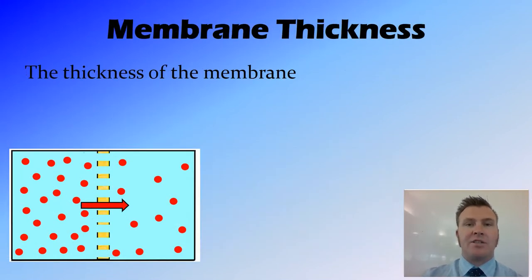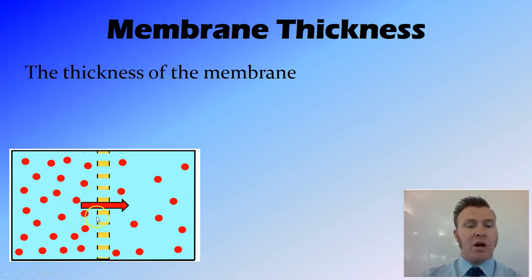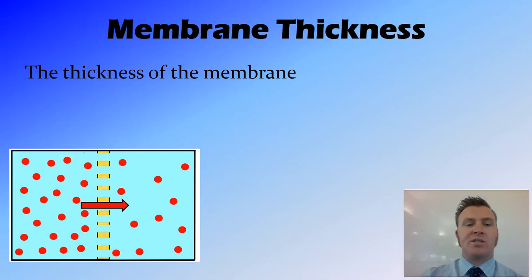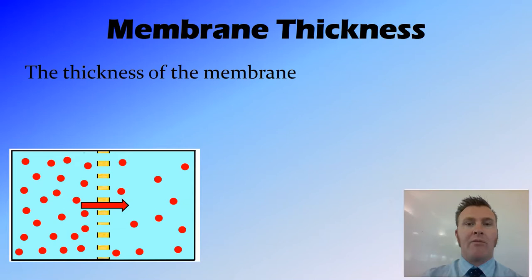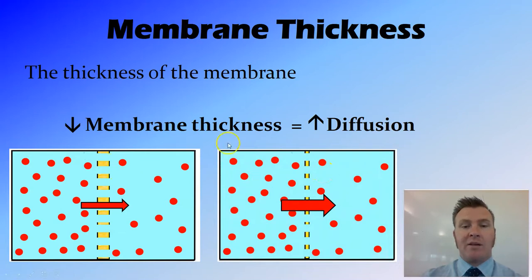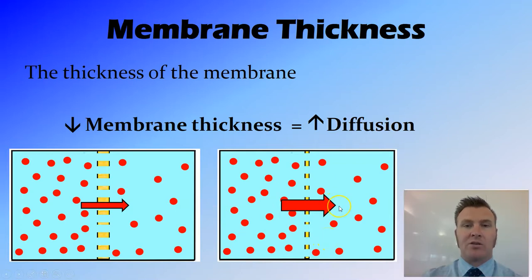The next thing that changes the speed is membrane thickness. These solute molecules are being pushed by Brownian motion across the membrane passively. The wider or thicker the membrane is, the slower it's going to be for those particles to move across, because there is more friction and more resistance. So by decreasing the membrane thickness, we increase the rate of diffusion. With a thinner membrane, more diffusion can happen, still moving from high to low concentration.